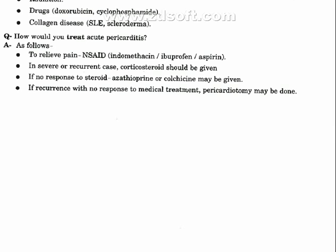Treatment of acute pericarditis: To relieve pain, NSAIDs such as indomethacin, ibuprofen, or aspirin are used. In severe or recurrent cases, corticosteroids should be given. If there is no response to steroids, azathioprine or colchicine may be given. If recurrence continues with no response to medical treatment, pericardiectomy may be done.